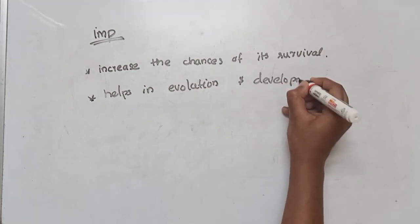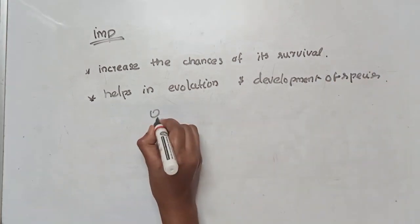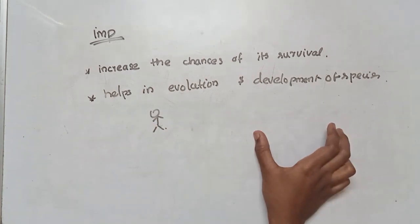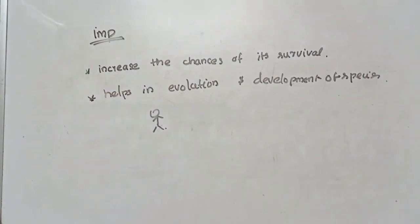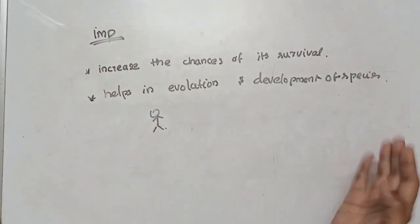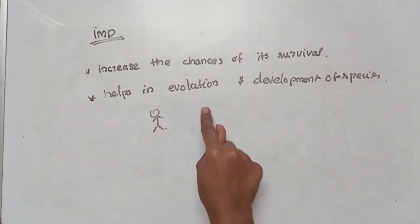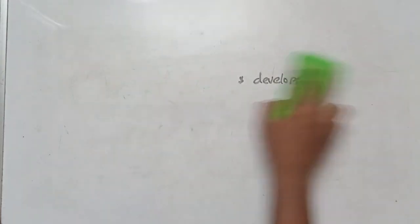The main importance is that variation helps in evolution and development of species. This is what evolution is about — for example, humans have evolved through variation. Variation leads to evolution, and that is why variations are important for the survival and development of organisms.